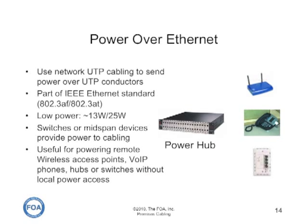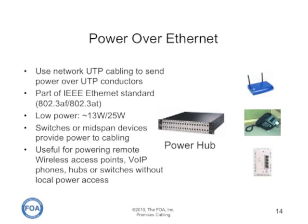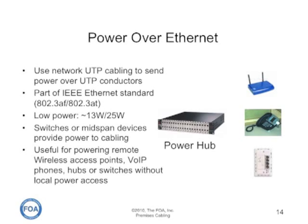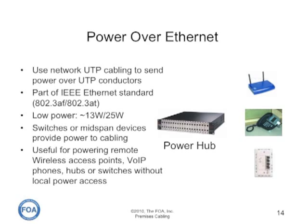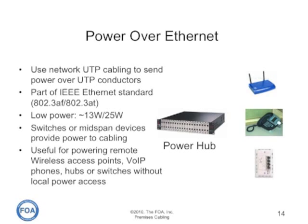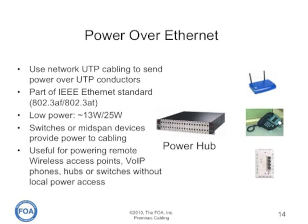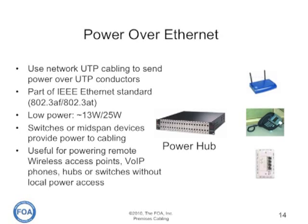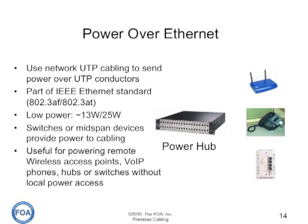One thing copper cabling can do that fiber cannot is provide both power and signal transmission. Power over Ethernet is part of the IEEE Ethernet standard — not cabling standards — and provides for two different power levels: 13 watts and 25 watts, through powered switches or mid-span devices. It's useful for powering remote wireless access points, Voice over IP phones, hubs, or switches without local power access. However, all devices must meet the maximum power output of Power over Ethernet, which is currently 25 watts, meaning many devices will not work on PoE and require local AC power.